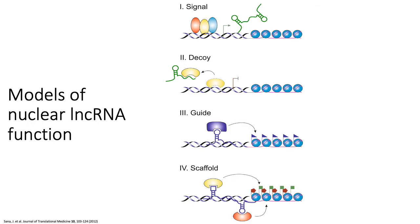In terms of specific functions, it's important to note that lncRNAs perform functions both within the nucleus and the cytoplasm. With respect to the nucleus, lncRNAs play a number of different roles. For example, they can interact directly with the transcriptional machinery in order to regulate the expression of target genes.